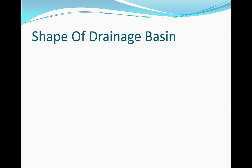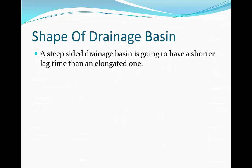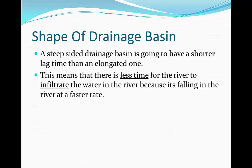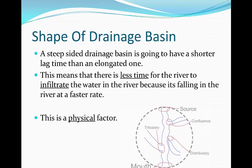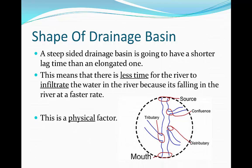Next we're going to look at the shape of the drainage basin. A steep-sided drainage basin, or one that has a much deeper relief, is going to have a shorter lag time than an elongated one. This is because when the rain falls onto the river valley, the steep sides are going to carry it into the river channel at a much faster rate. Therefore the rate of water entering the channel is going to exceed the rate of water leaving through infiltration, and as a result discharge will increase.